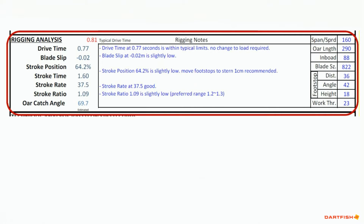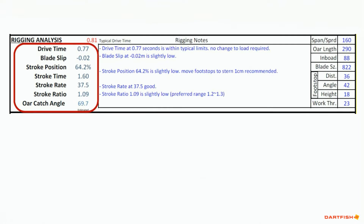Under graph analysis, the rigging analysis section is divided into three parts. The analysis calculations for drive time, blade slip, stroke position, stroke time, stroke rate, stroke ratio, and an approximate catch angle are shown in this area.